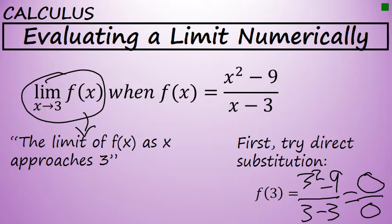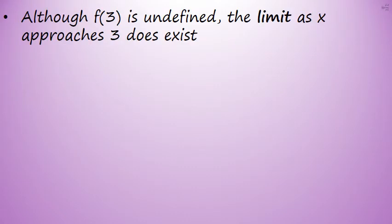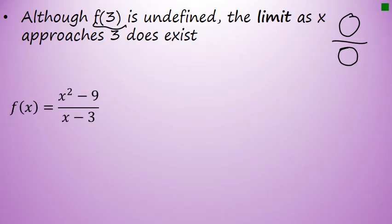It doesn't tell us anything about what the limit is, other than 0 over 0 implies the limit does exist. So although f(3) is undefined—whenever we did direct substitution and put a 3 in for x, we got 0 over 0, which means f(3) is undefined—but since we got the indeterminate form 0 over 0, that implies that the limit as x approaches 3 does exist.